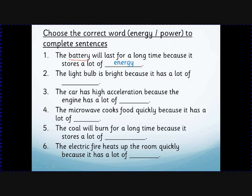When you buy a light bulb, you don't buy a 10 joule light bulb — you buy a 10 watt or 50 watt light bulb. This is to do with the amount of energy it converts per second, so the bigger the power, the brighter the bulb. Similarly, a more powerful car engine can give the car more kinetic energy more quickly, so it's the power of the engine that tells you how fast the car can accelerate.